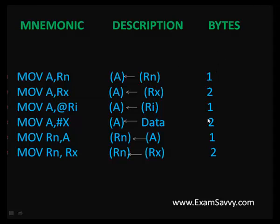There are three types of bytes. If there is only an opcode, it is called a 1-byte instruction. If there is an opcode followed by an 8-bit operand, it is called a 2-byte instruction. If the operand is 16-bit and followed by an opcode, it is called a 3-byte instruction. So totally three types of instructions are available.